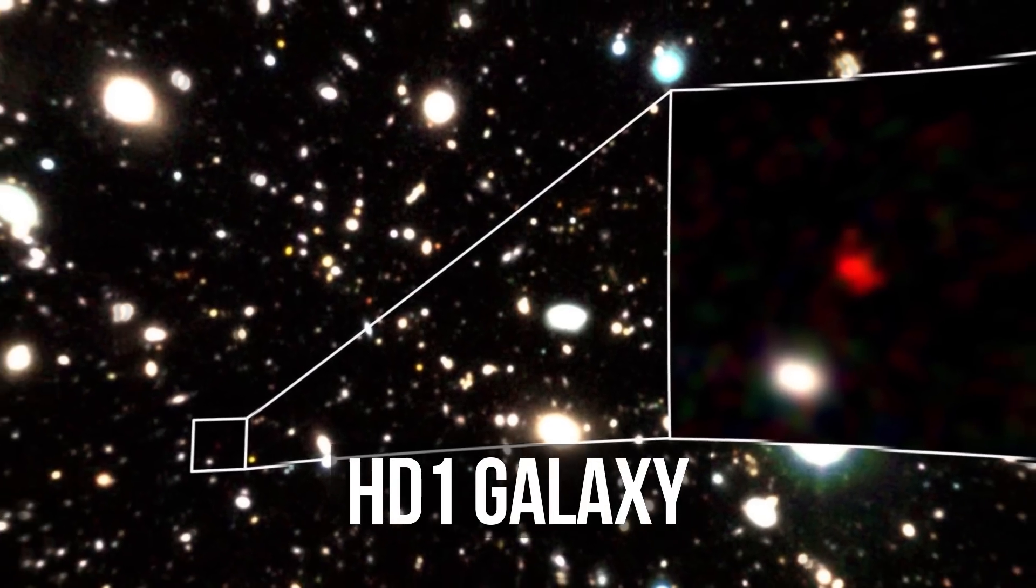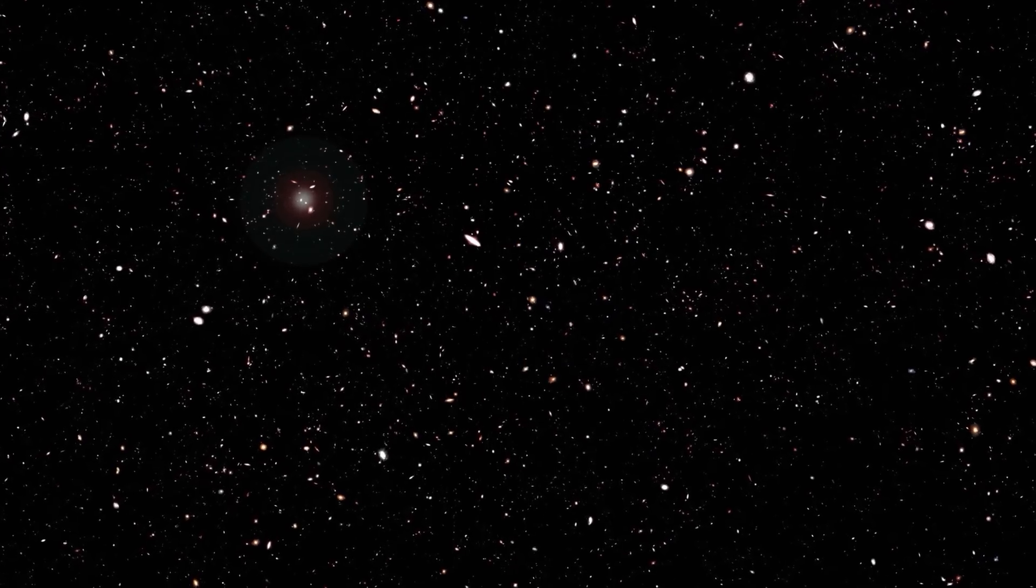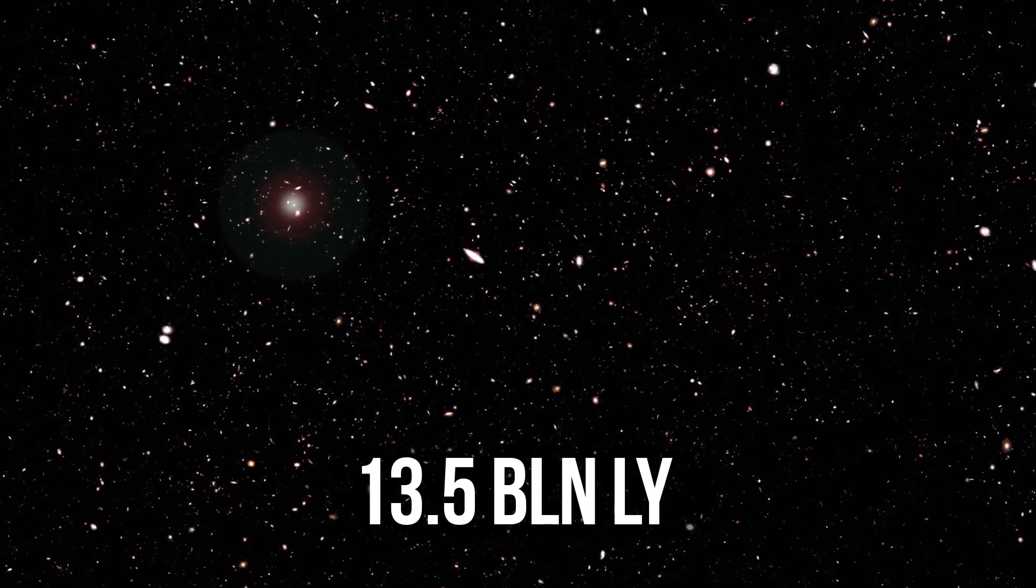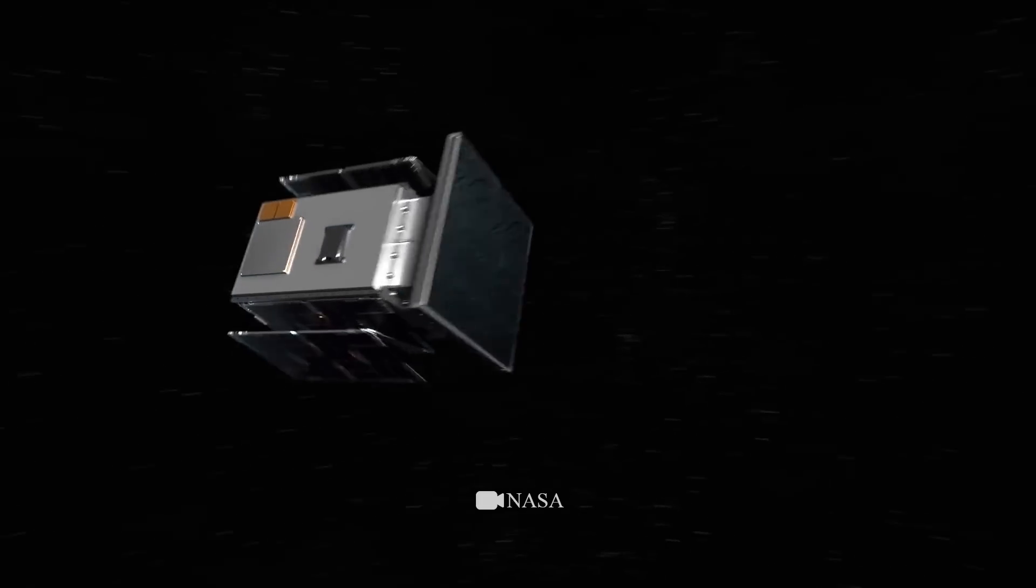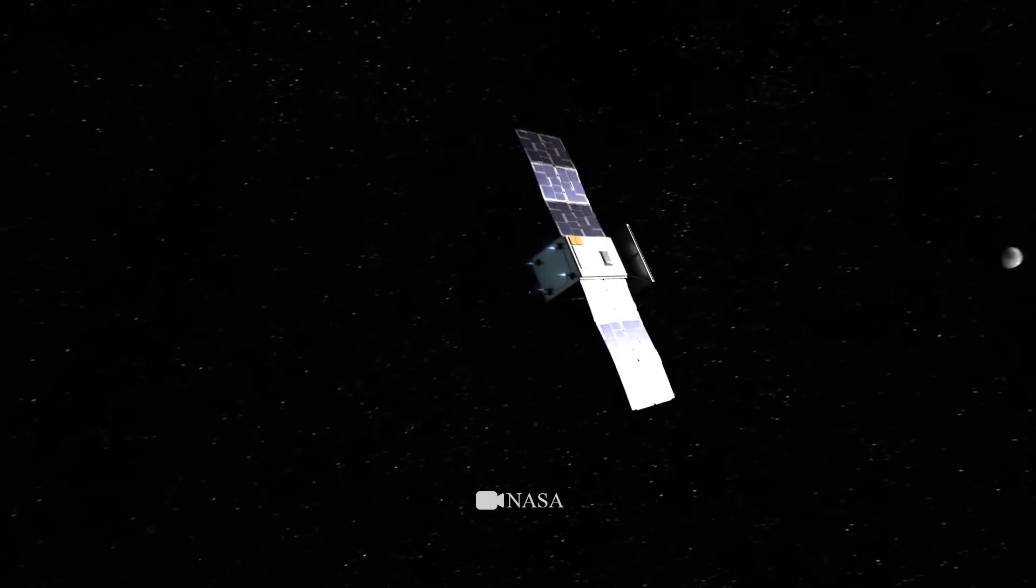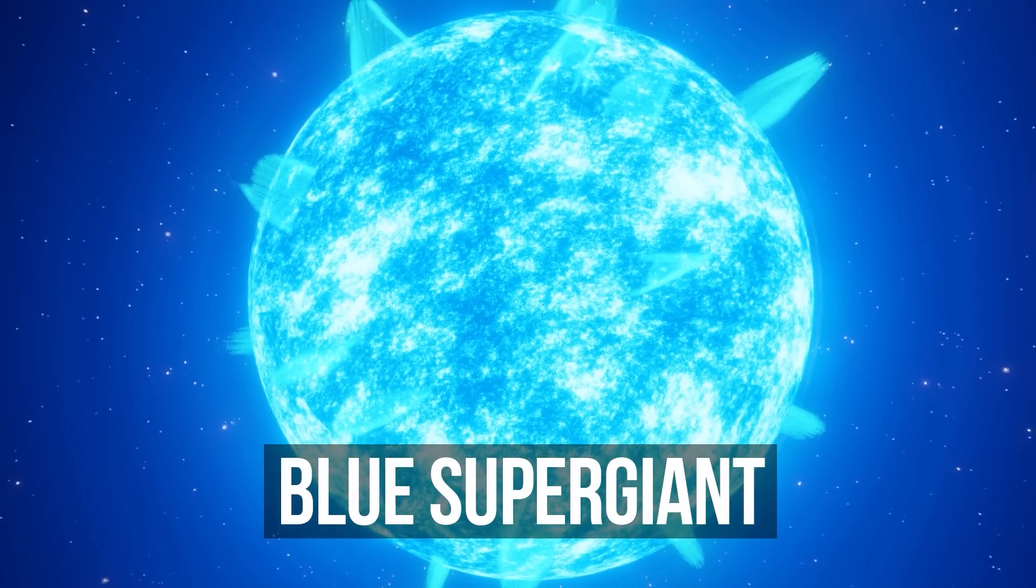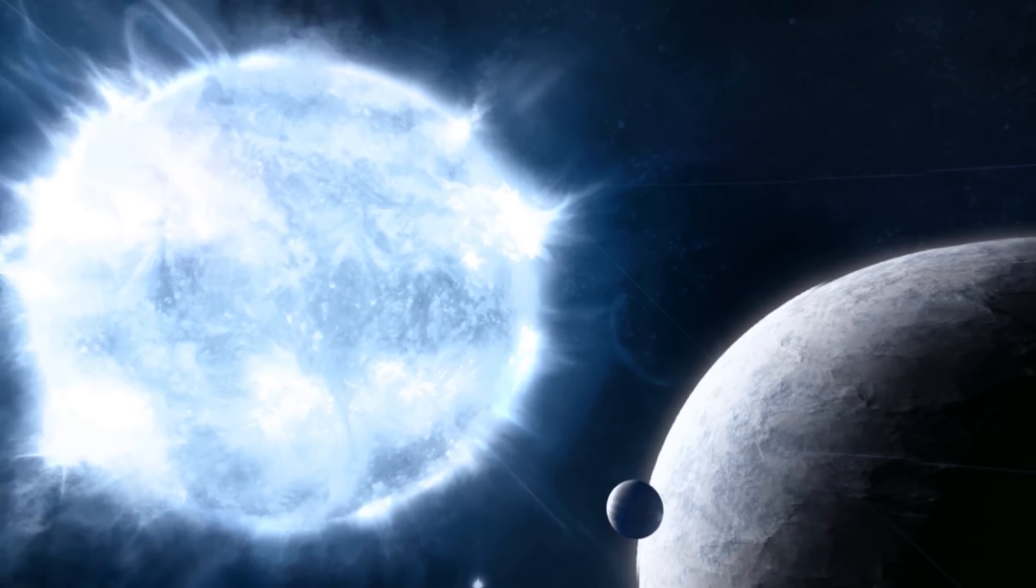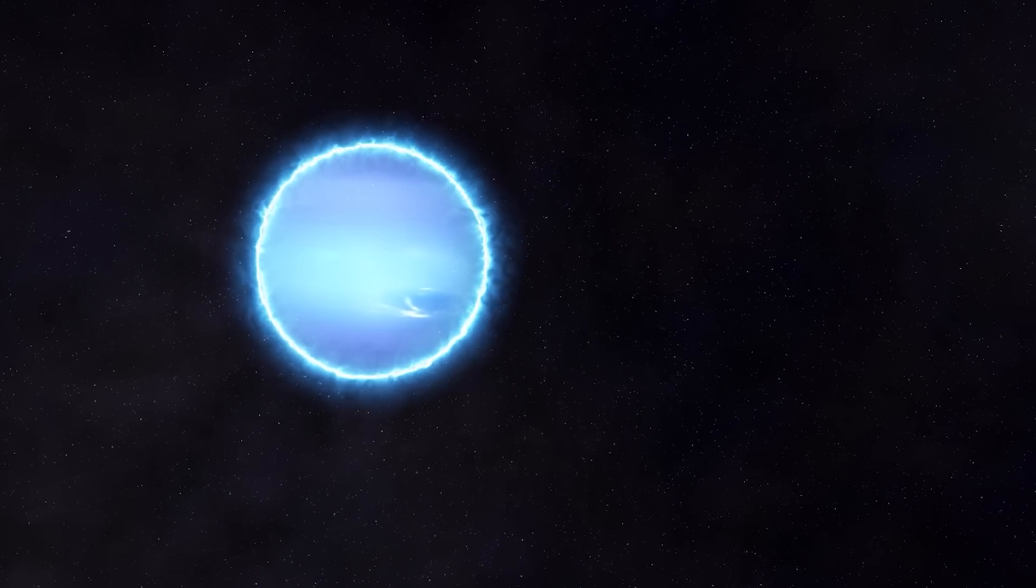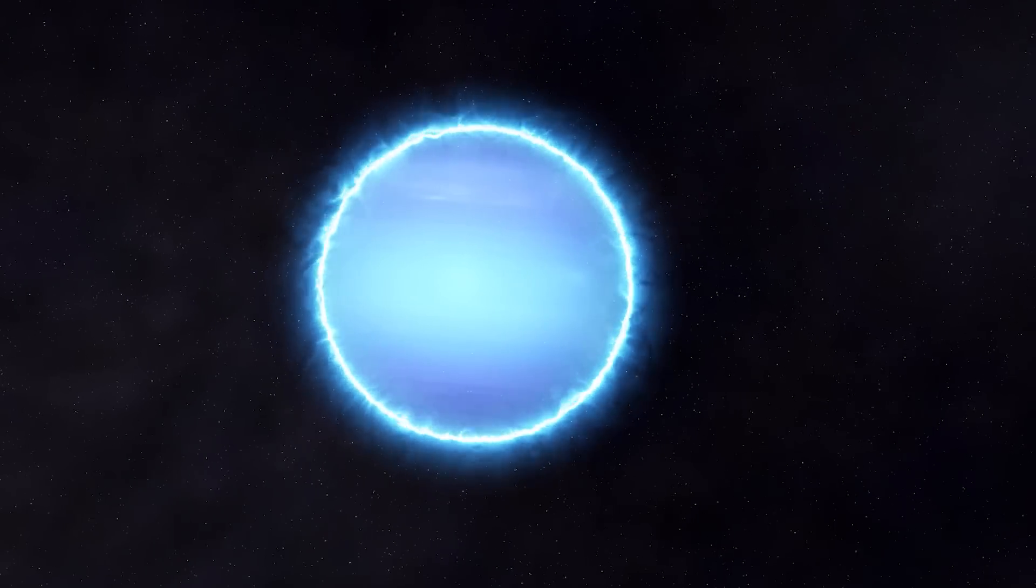HD1 is the oldest and the farthest galaxy from us. It's 13.5 billion years old and it's still inexplicably bright. Astronomers managed to take this photo only with the help of powerful ultraviolet radiation. This means massive blue stars appeared in HD1 long ago, at the dawn of time. The confusing part is that their light is at least 10 times brighter than it was thought possible.